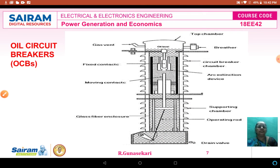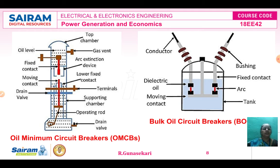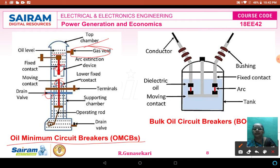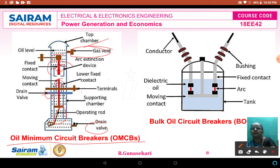This image is for reference — the minimum oil circuit breaker (MOCB). The diagram shows: the top chamber, the oil level, the gas vent, the fixed contact, the moving contact, the drain valve, the operating rod, the supporting chamber, the terminals, the lower fixed contact, and the arc extinction device.